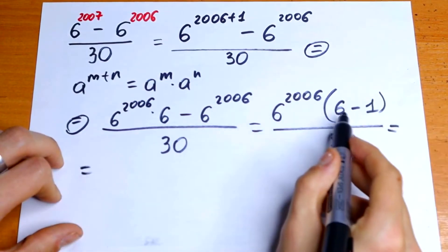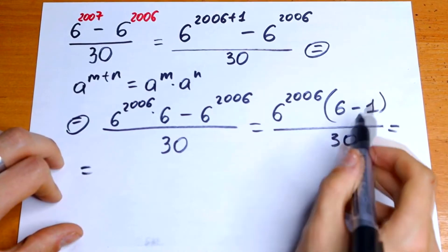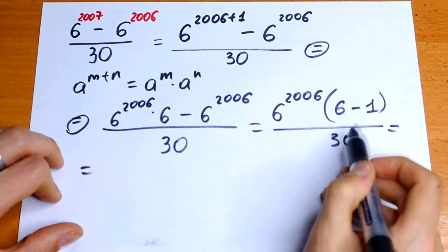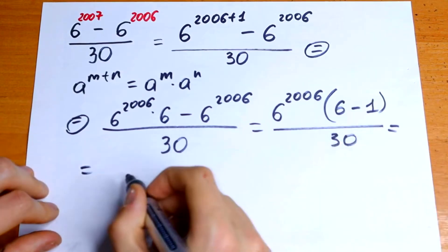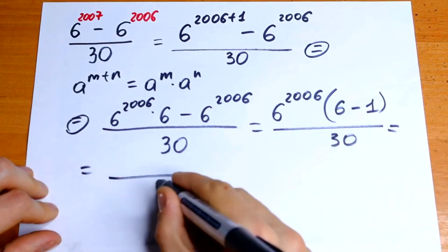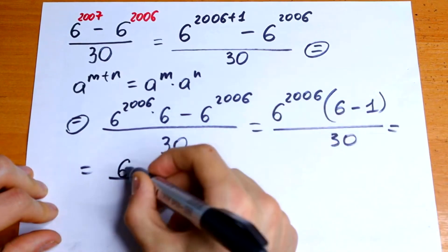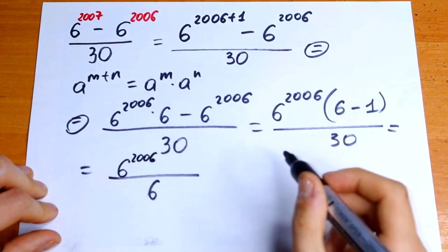We can calculate this 6 minus 1, which is 5, and we can divide both numerator and denominator by 5. In the numerator we will have only 6 to the 2006 power, and in our denominator we will have only 6.